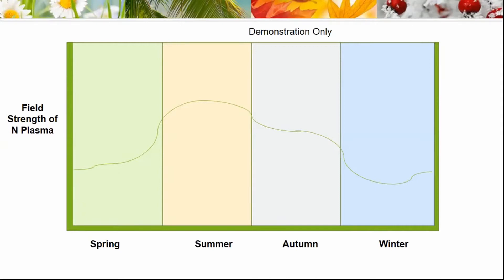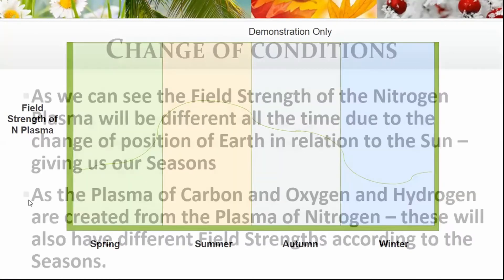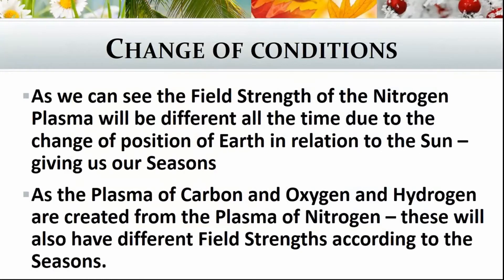All the time, because of the changing conditions, the nitrogen plasma field strength varies. From that nitrogen plasma we create the carbon, oxygen, and hydrogen plasmas, and because they've been created from that nitrogen, they will also exhibit different field strengths during the different seasons. So depending on the season, your nitrogen plasma of summer will have a different field strength to that of spring, autumn, and winter. The carbon, oxygen, and hydrogen plasmas created from the nitrogen plasma will also have different field strengths according to the seasons, which correspond to the gap between the sun and the earth.